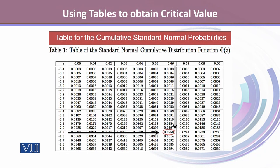This is the table for the cumulative standard normal probabilities. If a random variable follows a normal probability distribution, we can convert it into the standard normal and then we look for the area.